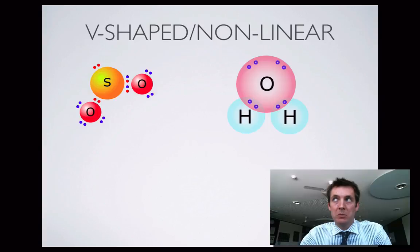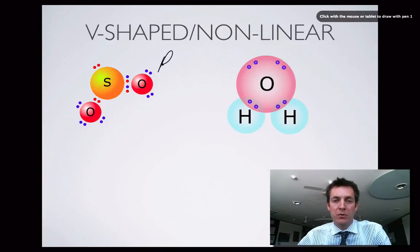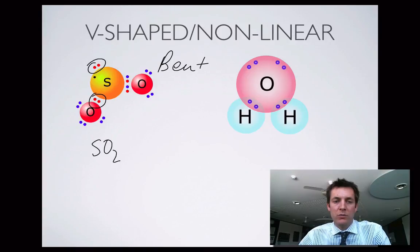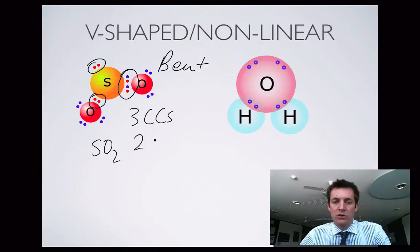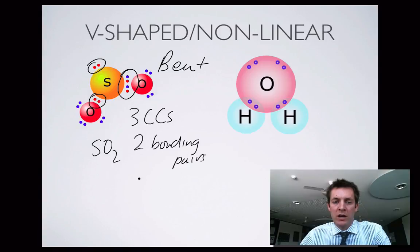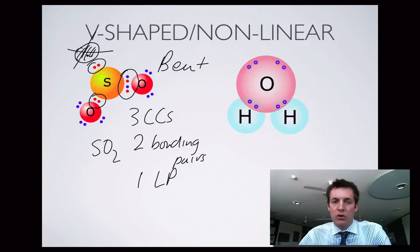The last shape can arise in two different ways. It's called V-shaped, non-linear, or bent. This molecule here is SO2. We've got a pair of electrons, another pair, and two pairs forming a double bond — three charge centres total: a double bond, a single bond, and a lone pair. The double bond acts as one bonding pair, giving two bonding pairs and one lone pair. If there was another atom where the lone pair is, we'd have trigonal planar — but there isn't, so that corner is missing, and the shape is bent.